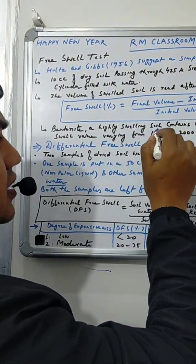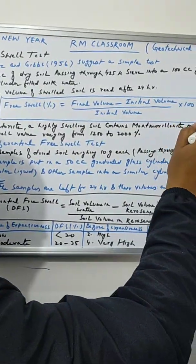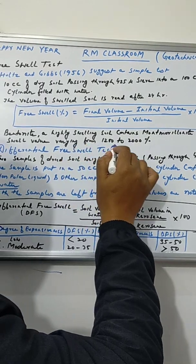Bentonite, a highly swelling soil containing Montmorillonite mineral, may have swelling value varying from 1200 to 2000 percent.